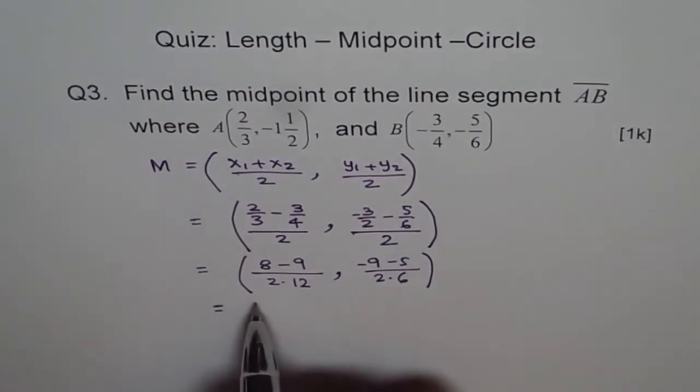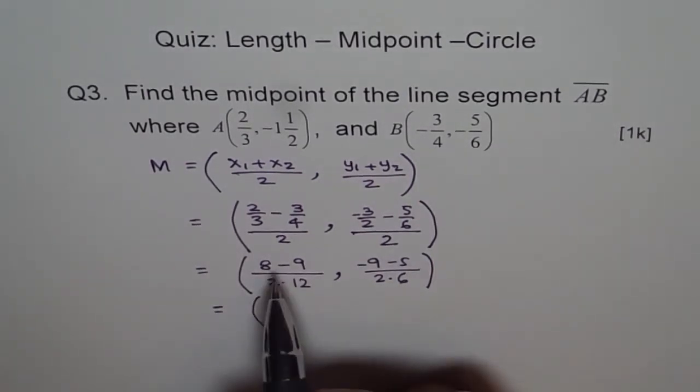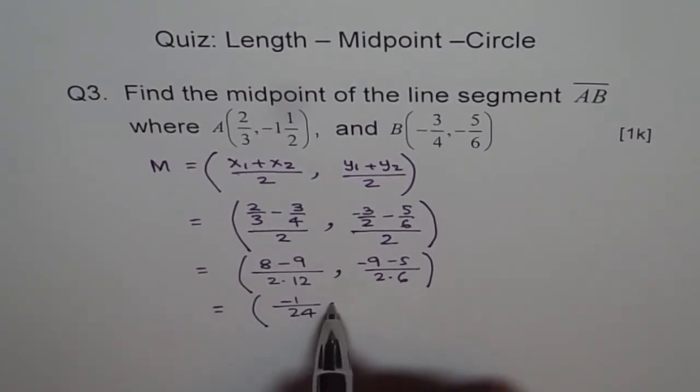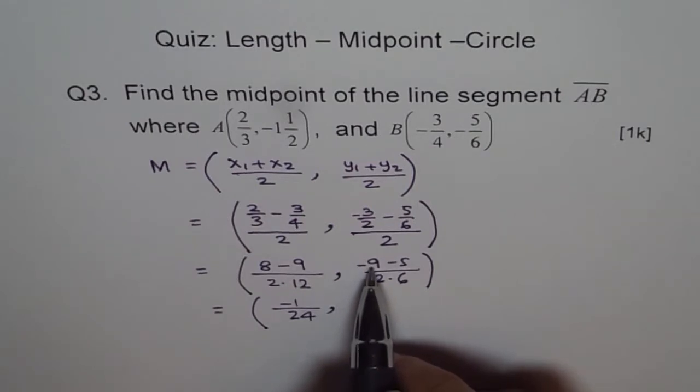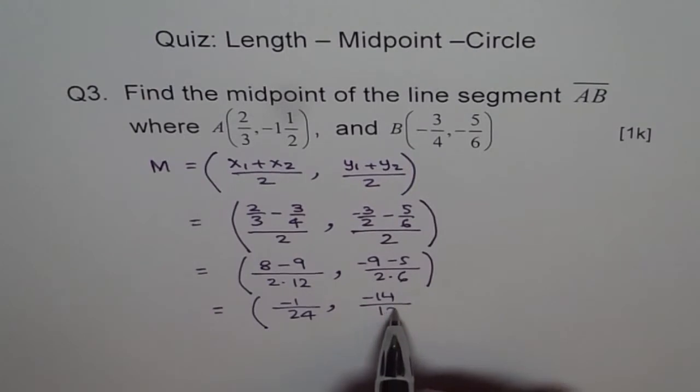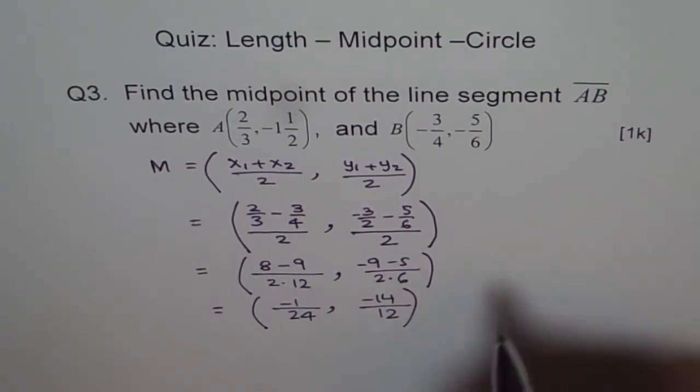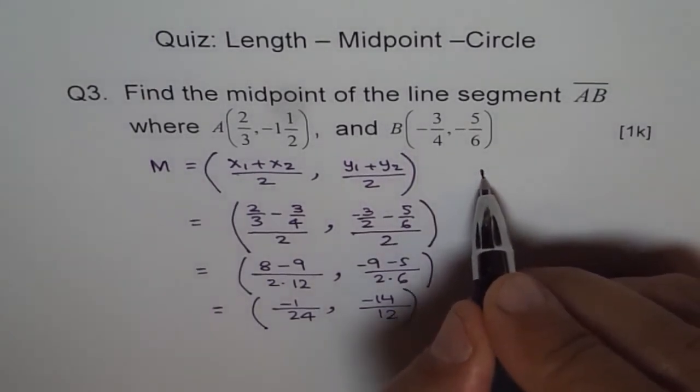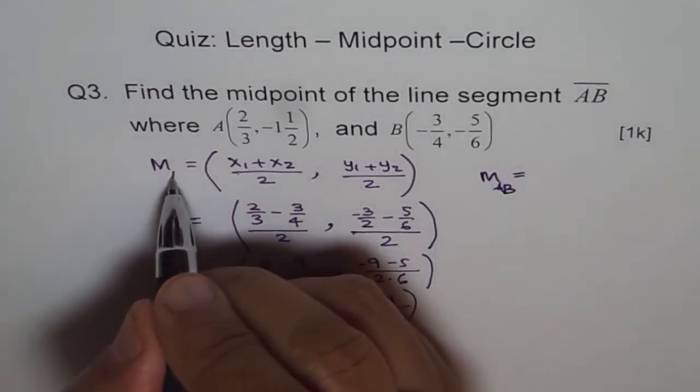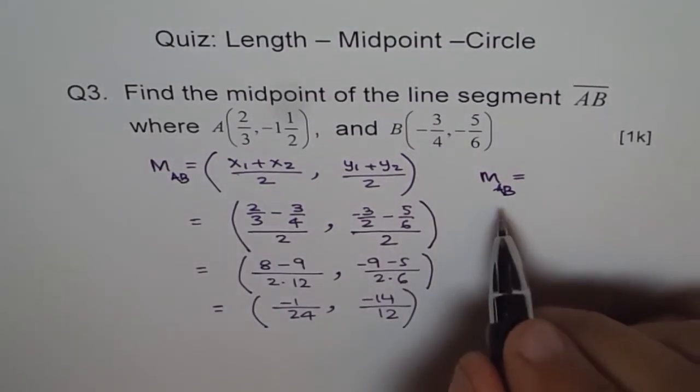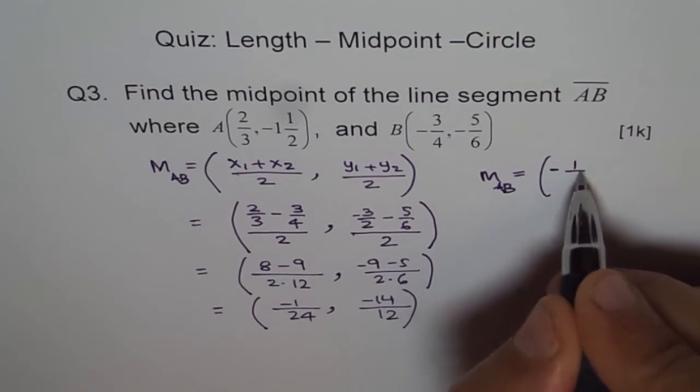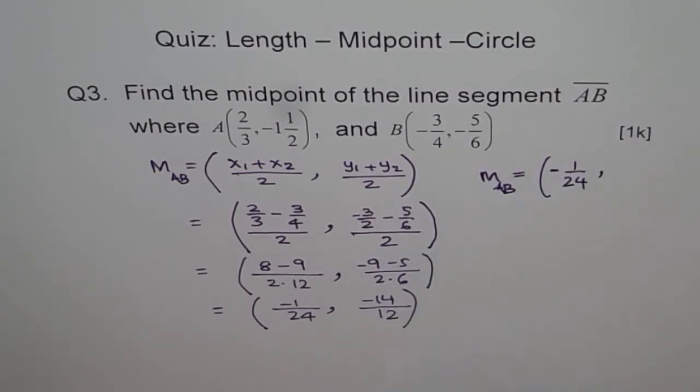And this could be written as minus 1 over 24. Comma. This is minus 9 and minus 5, which is minus 14 over 12. That could be simplified. And therefore we get midpoint M of A and B. We can write A and B here as a subscript. The values are minus 1 over 24, and this could be simplified. You can divide both by 2, so you get minus 7 over 6.